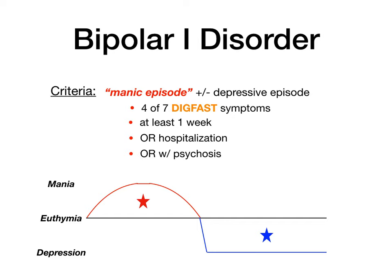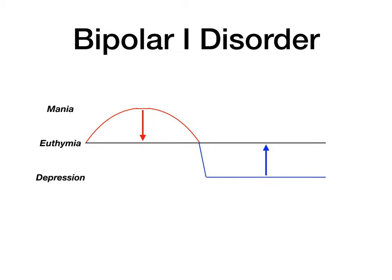For bipolar 1, you have to have a manic episode plus or minus the depressed episode. To treat this: for the manic phase you want to bring it back down to euthymia; for the depressive phase you push it back up to euthymia. Different drugs are used for each, and this is just a quick overview — mood stabilizers will get their own video.